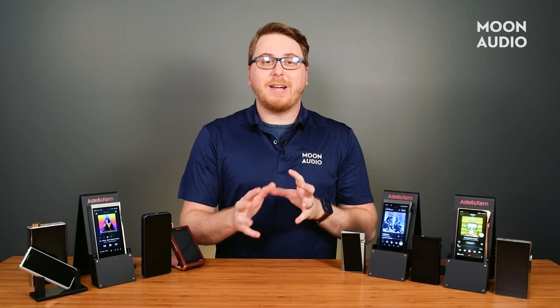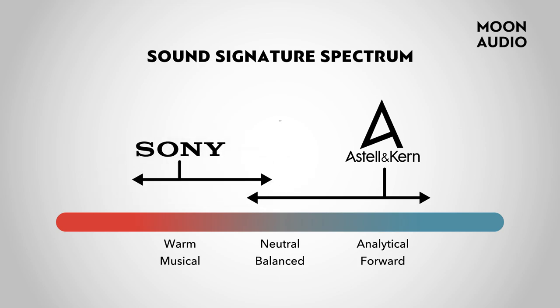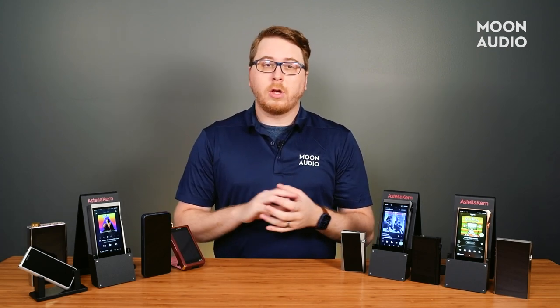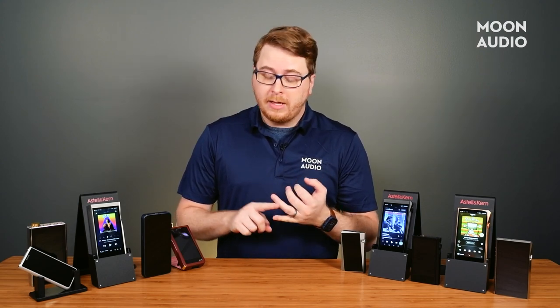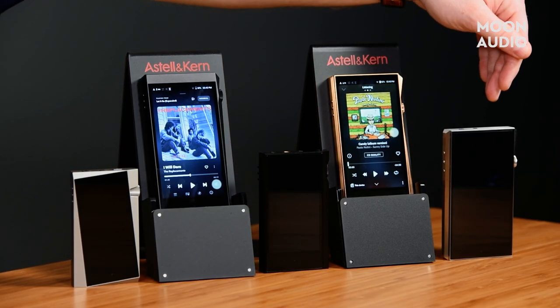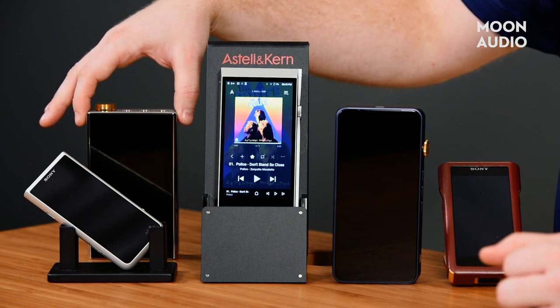Let's do a quick sound signature recap. Astell & Kern DAPs are going to be on the more analytical, forward side of the spectrum. Sony is going to be more warm and musical, and then iBasso is going to be somewhere in the middle with a more balanced sound signature. The type of music you like to listen to is really going to determine which DAP is going to be better suited for that genre. You're going to want to take into consideration things like the DAC, the amp, and the connections to see if it's compatible with your headphones. In our buying guide, we'll talk more about other DAPs like the SP-1000, the Sony 507, the DX220 Max from iBasso, and much more.